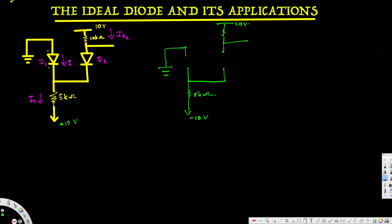So this voltage here is the anode voltage Va and this is Vk. For this one, this is the anode part and this is the cathode part, so this is Va and this is Vk. Now what we have to do is figure out the Va and Vk values.